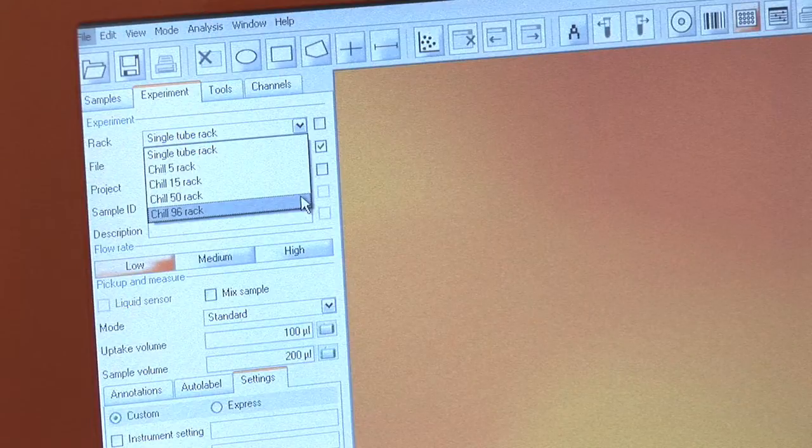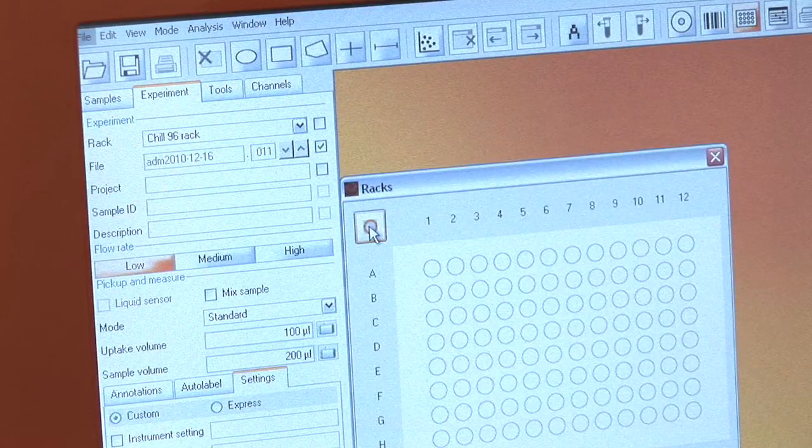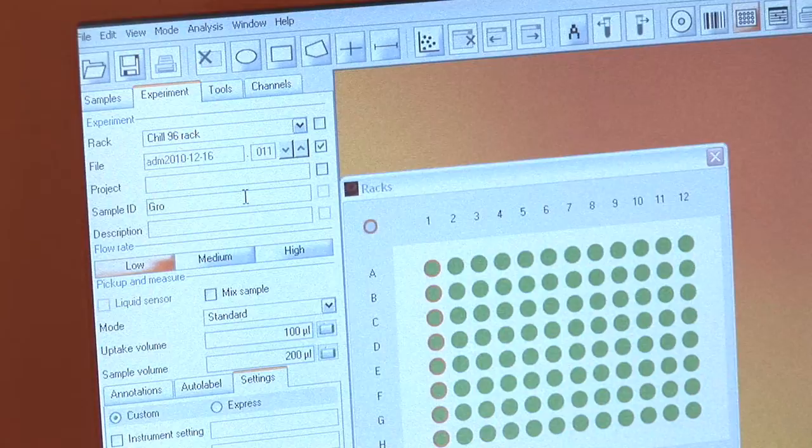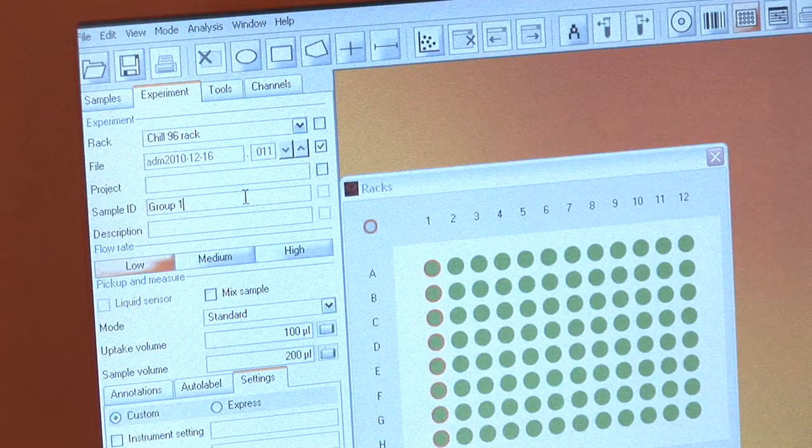From the Experiment menu, select the 96-well rack option and define the experiment details, such as the sample ID for each rack position.